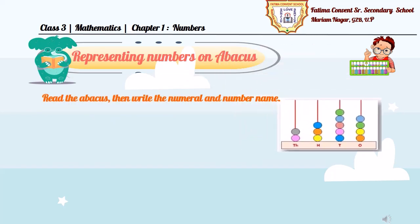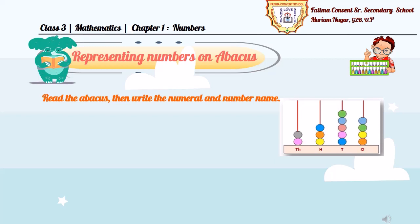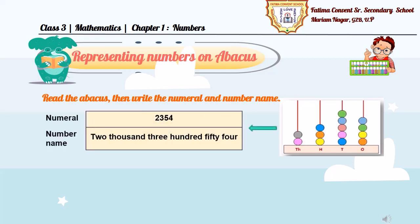Children, let's learn how to read and find the numbers using Abacus table. Some examples are given here. Read Abacus, then write the numeral and number name. In this Abacus table, we can see there are 4 beads in one's place, 5 beads in ten's place, 3 beads in hundred's place and 2 beads in thousand's place. So, the numeral formed will be 2354.